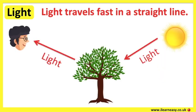Objects that don't produce light themselves can be seen because they reflect light from another source. When the light enters the eye, a message is sent to the brain and the brain interprets what it's seeing — for example, light travels from the sun to a tree, is reflected, and then travels into the eye. Although light can only travel in a straight line, it's possible to use reflective objects such as mirrors, allowing light to be reflected and changing its direction so we can see things that would normally be out of sight.